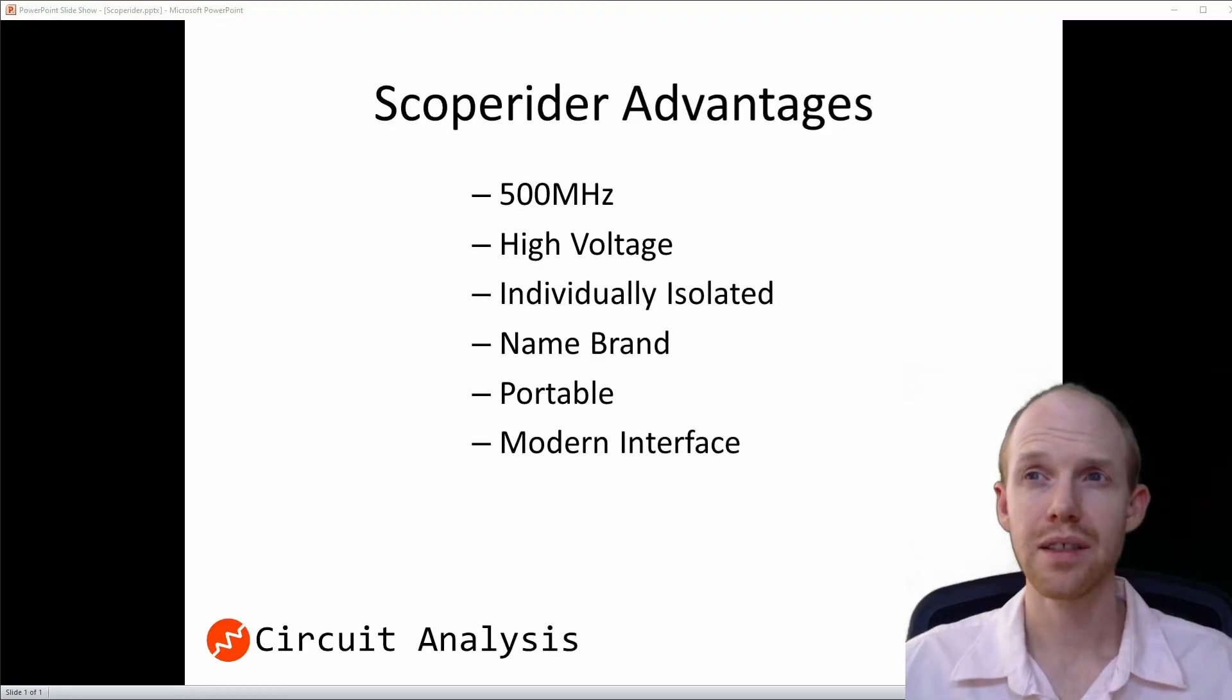So I design power supplies, and when looking for what kind of a scope would be best for me, I was thinking of these main factors. So I could get by with 100 MHz, but I think 500 MHz is pretty overkill for most of the stuff I do. And this one was 500 MHz, so I figured definitely plenty of bandwidth.